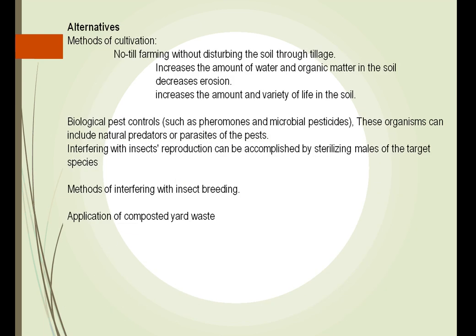What can we do instead of using pesticides and chemicals? We can try no-till farming, which involves only planting seeds. In the past, we would run a rotavator through the corn field, break up the clods, then run another device to plant holes for the corn before finally planting. However, this allowed more methane to escape and more beneficial organic matter to be lost.